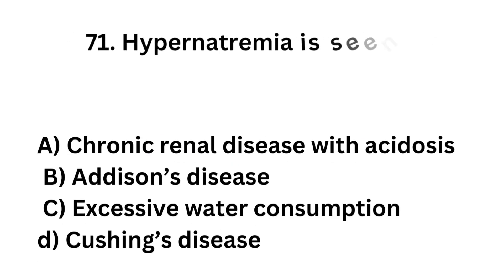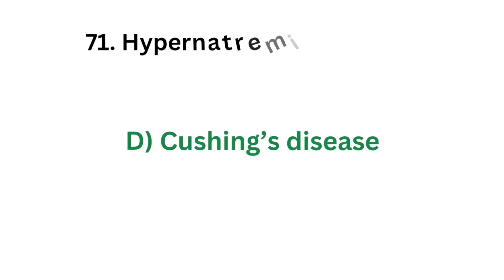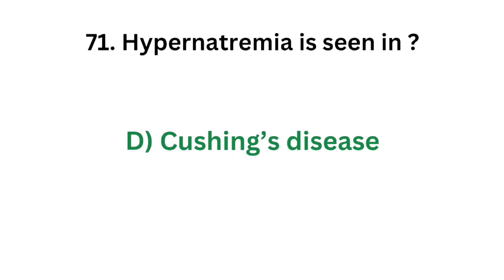Question number 71. Hypernatremia is seen in: Option A - Chronic renal disease with acidosis; Option B - Addison's disease; Option C - Excessive water consumption; Option D - Cushing's disease. Hypernatremia is the condition of increased sodium concentration, and it is seen in Cushing's disease. The correct answer is Option D, Cushing's disease.